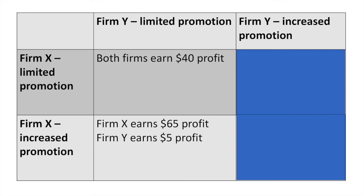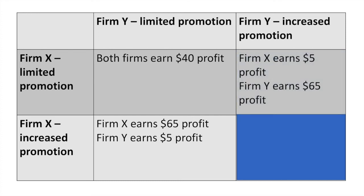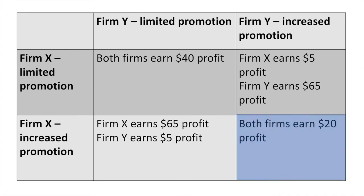However, Firm X needs to keep in mind what Firm Y would do. If Firm Y increases promotion while Firm X continues with limited promotion, then Firm X will earn very little profit while Firm Y earns $65 in profit. If both firms are unsure of what the other will do, they may just both increase their promotion, which leads to a profit of $20 each.